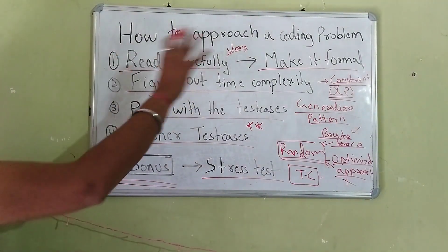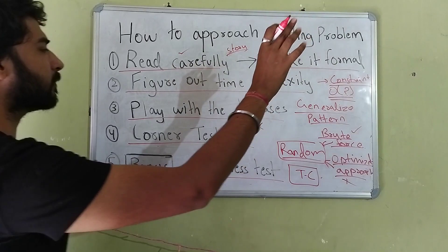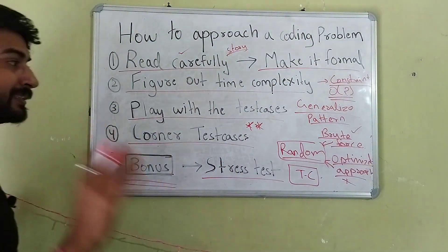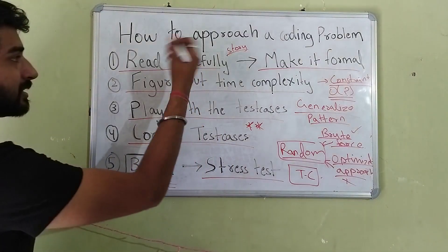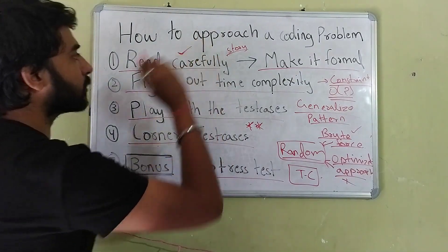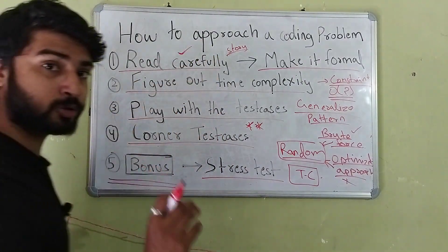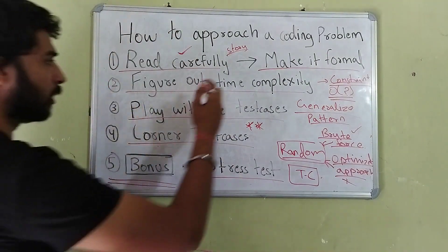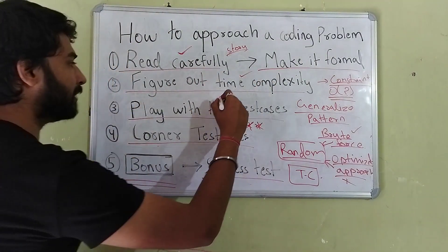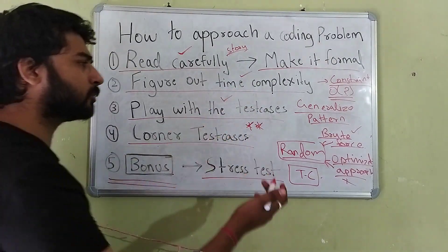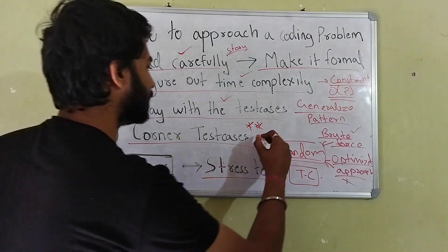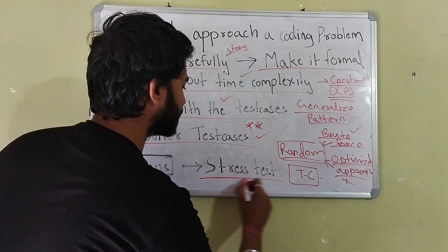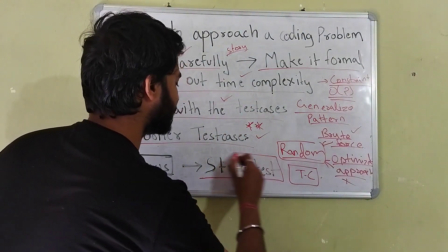So that's pretty much it. Read the problem carefully and make a formal statement in your head — you should really read it in one shot and not make silly mistakes when time is crucial. Figure out the time complexity needed, play with the test cases, form an approach, think about corner test cases, and if you still get a wrong answer, stress test and debug your code.